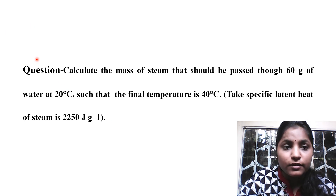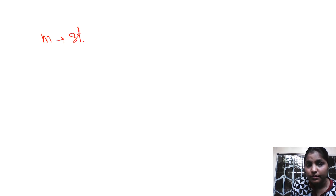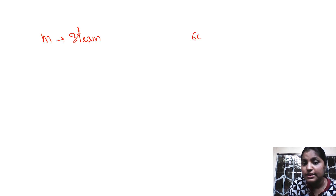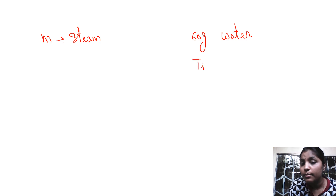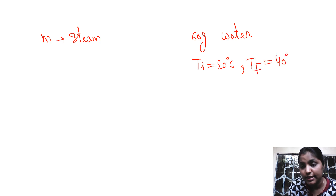Let's solve this question. Let us suppose m is the mass of steam required to raise the temperature of 60 grams of water from 20 degrees centigrade to 40 degrees centigrade.